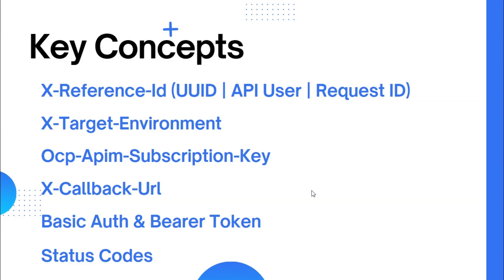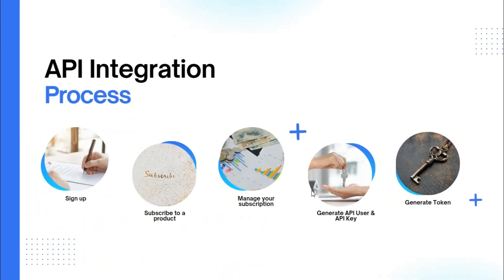Basic auth, bearer token, and status codes are topics I've already discussed in previous videos. For the API integration process: first we need to sign up and create an account, then subscribe to the product of our choice. After that we manage our subscription by creating a primary or secondary key. Using an API testing tool like Postman, we can then generate an API user, generate our API key, and later generate our token.